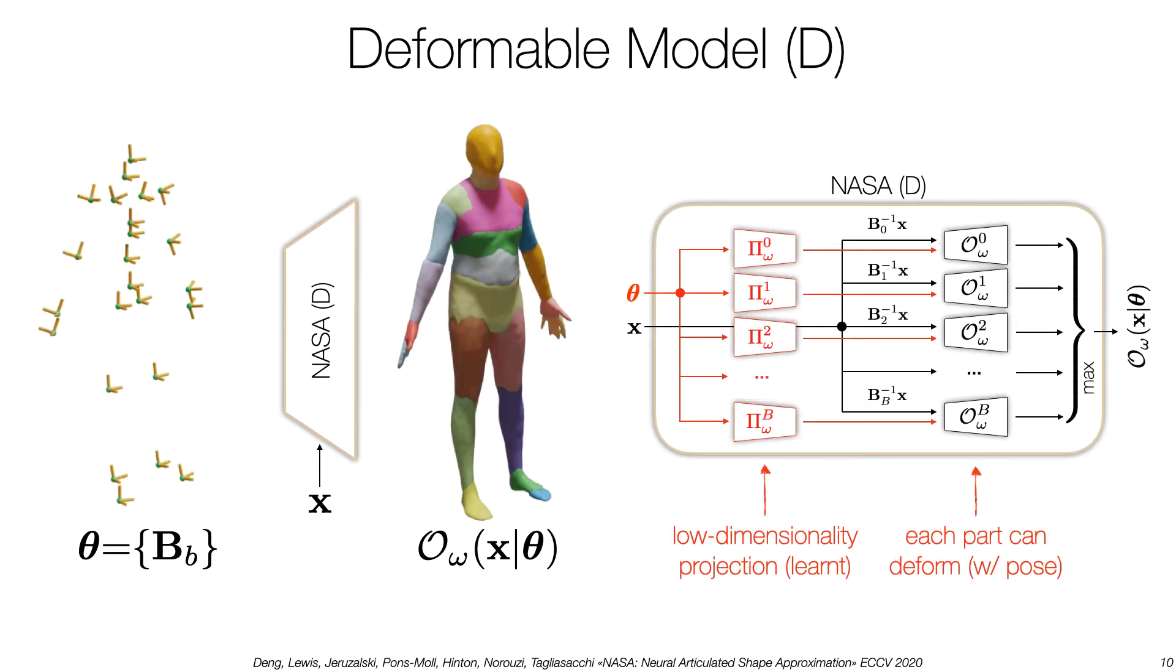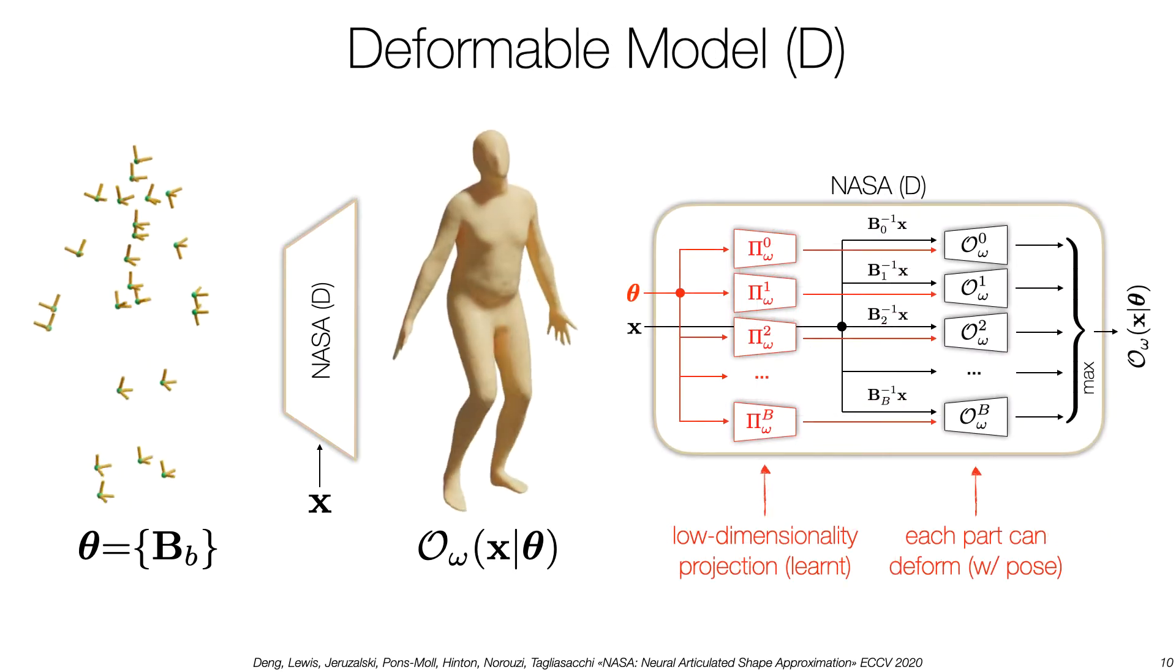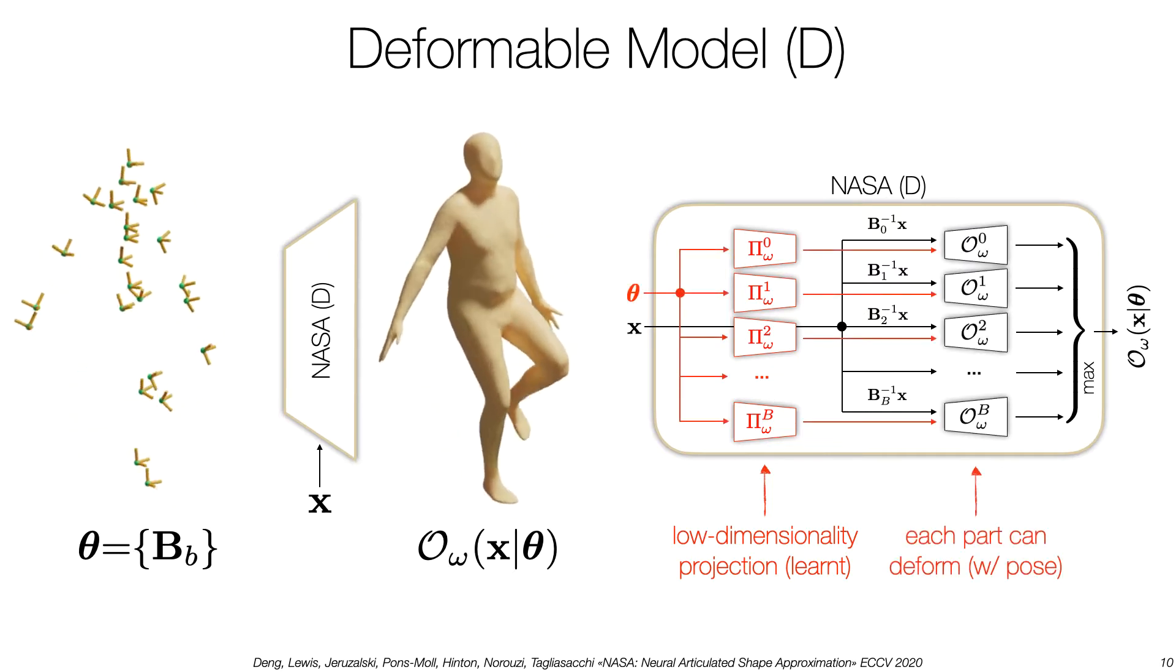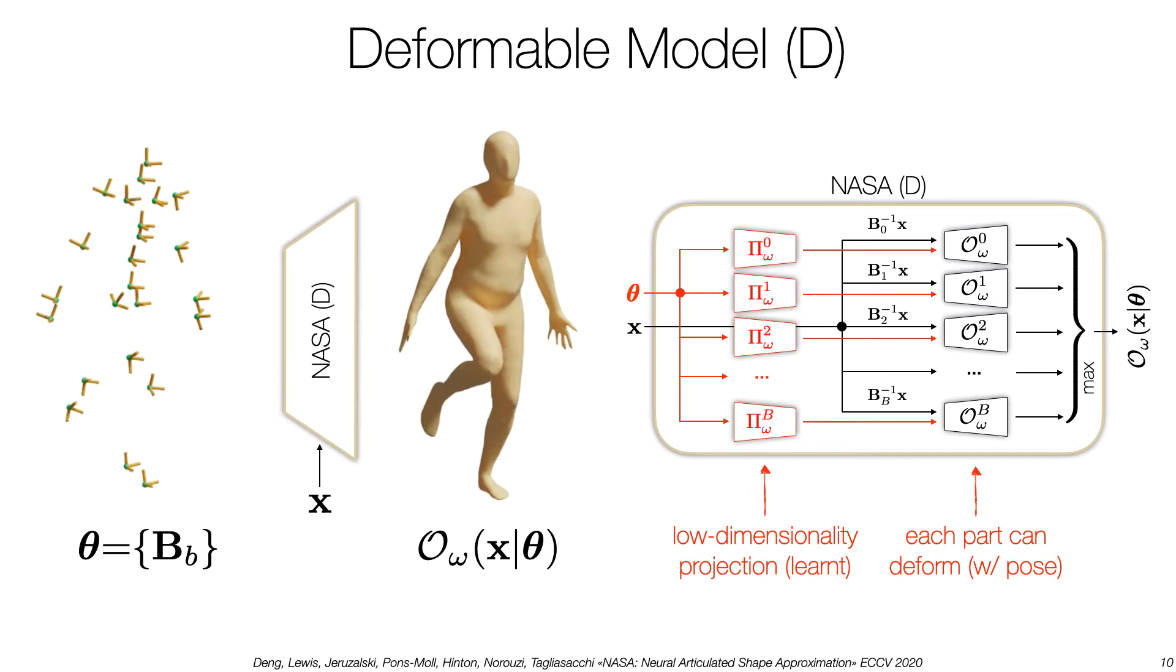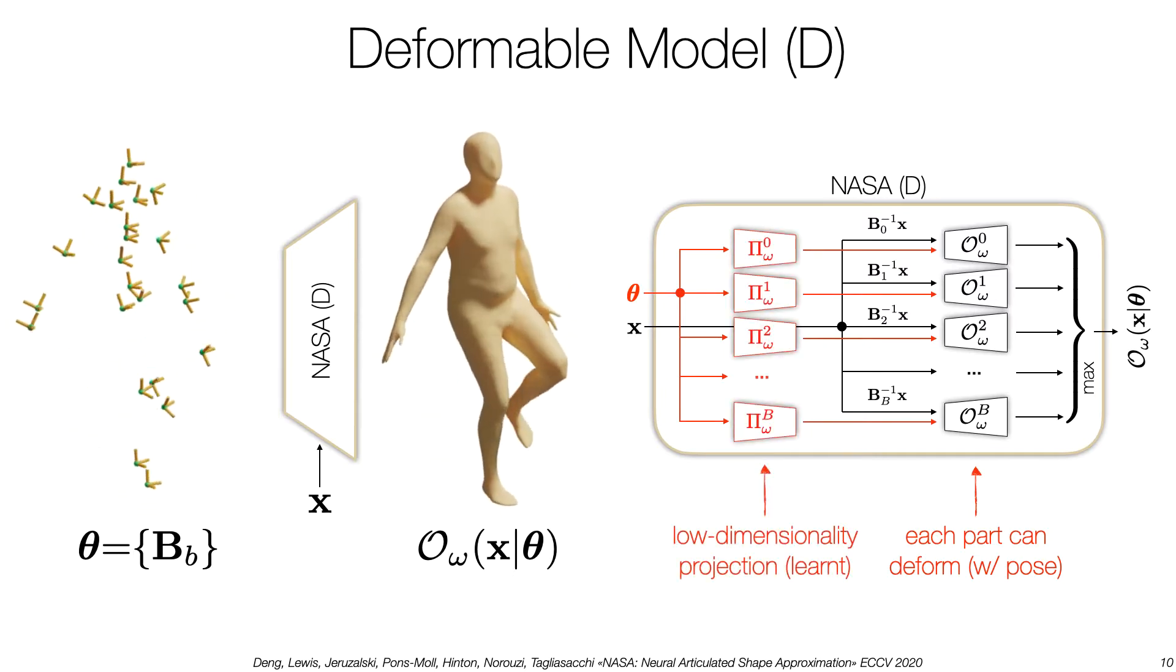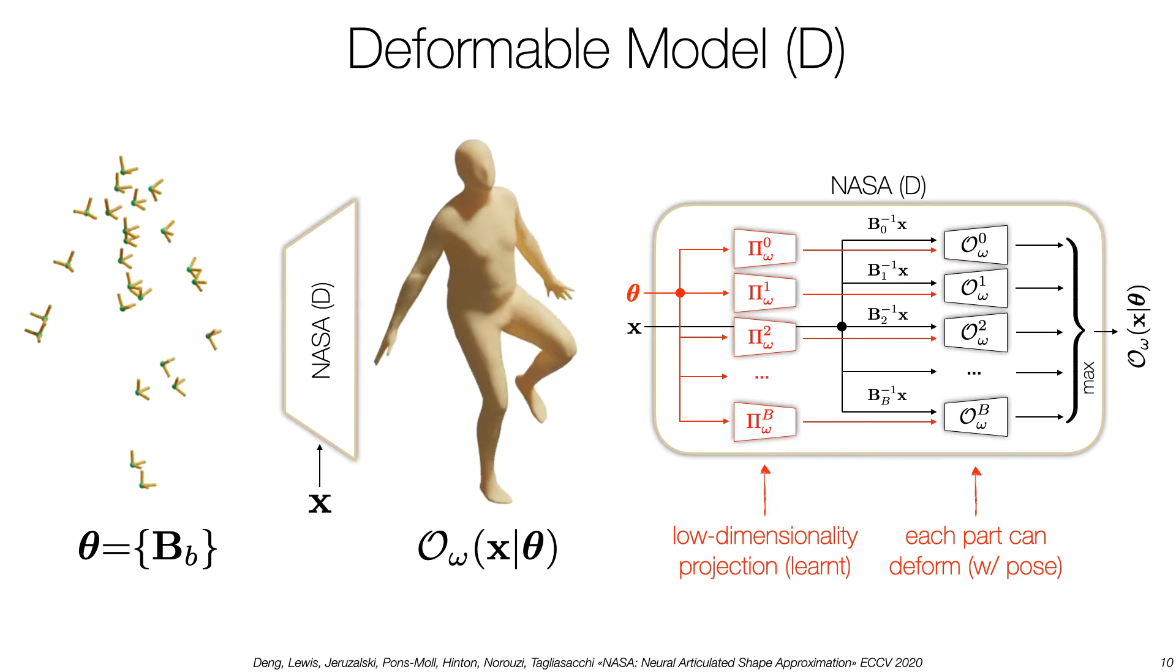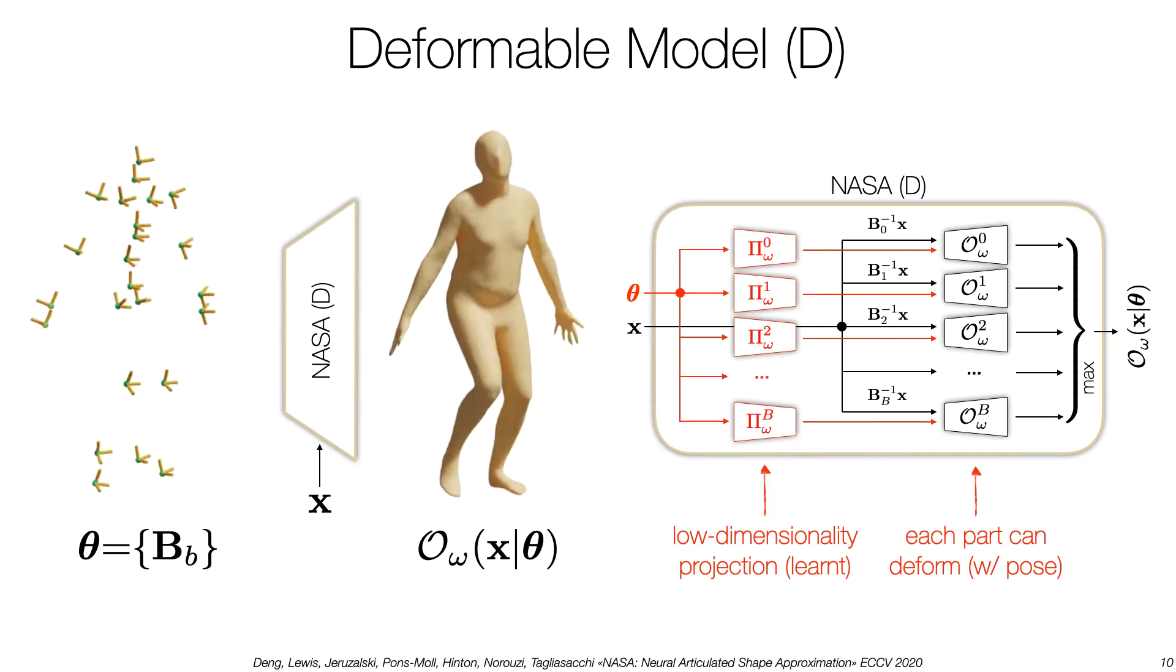Humans are not made of rigid parts, and to allow each body part to deform according to pose, we add a pose feature in input to each of the part occupancy networks. While the learned projection pi allows the network to learn localized deformations. This mimics the design of pose-dependent deformations that's widely used in graphics.